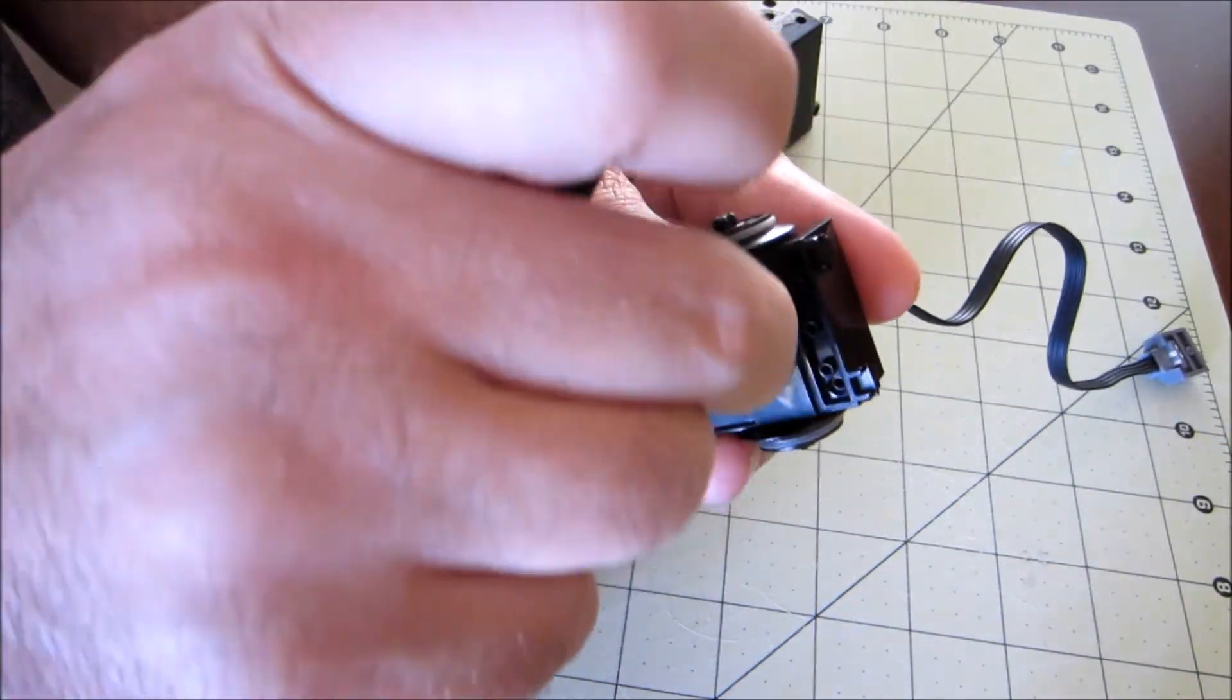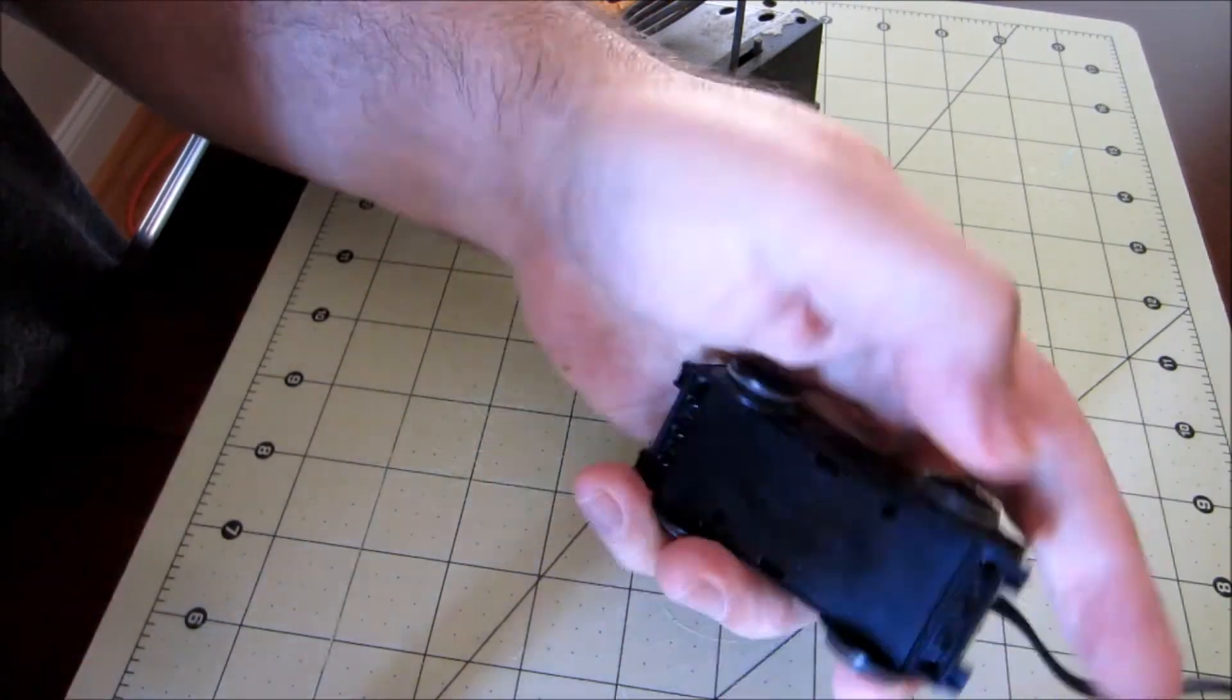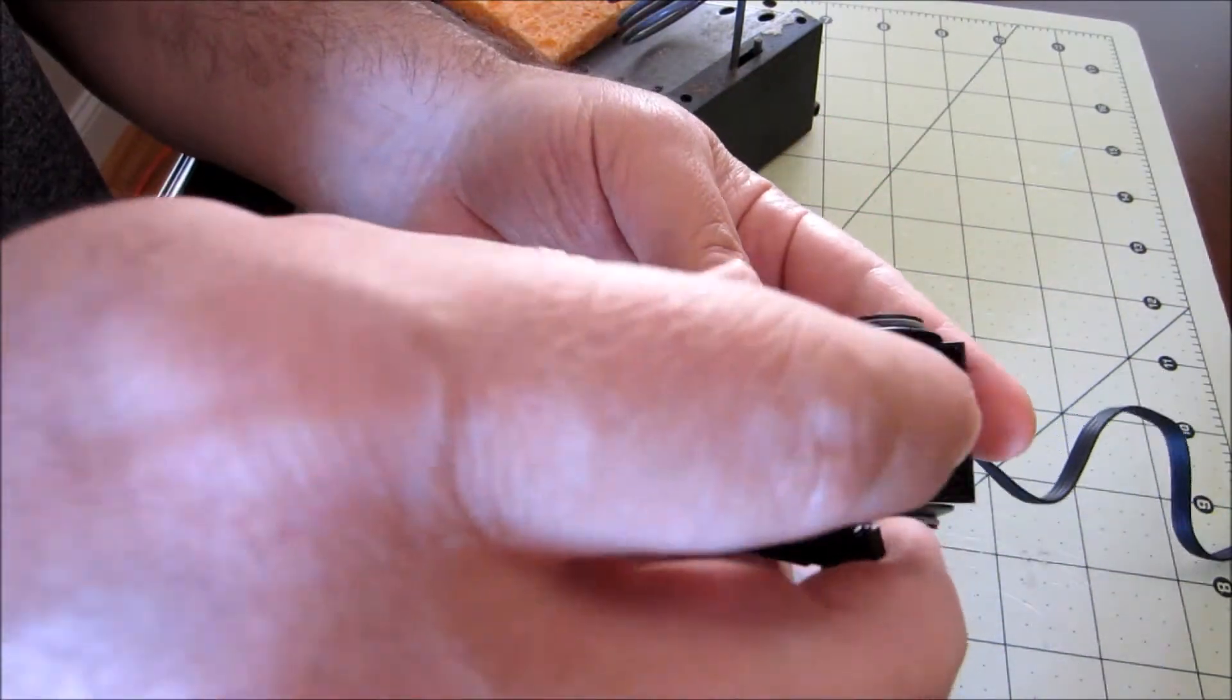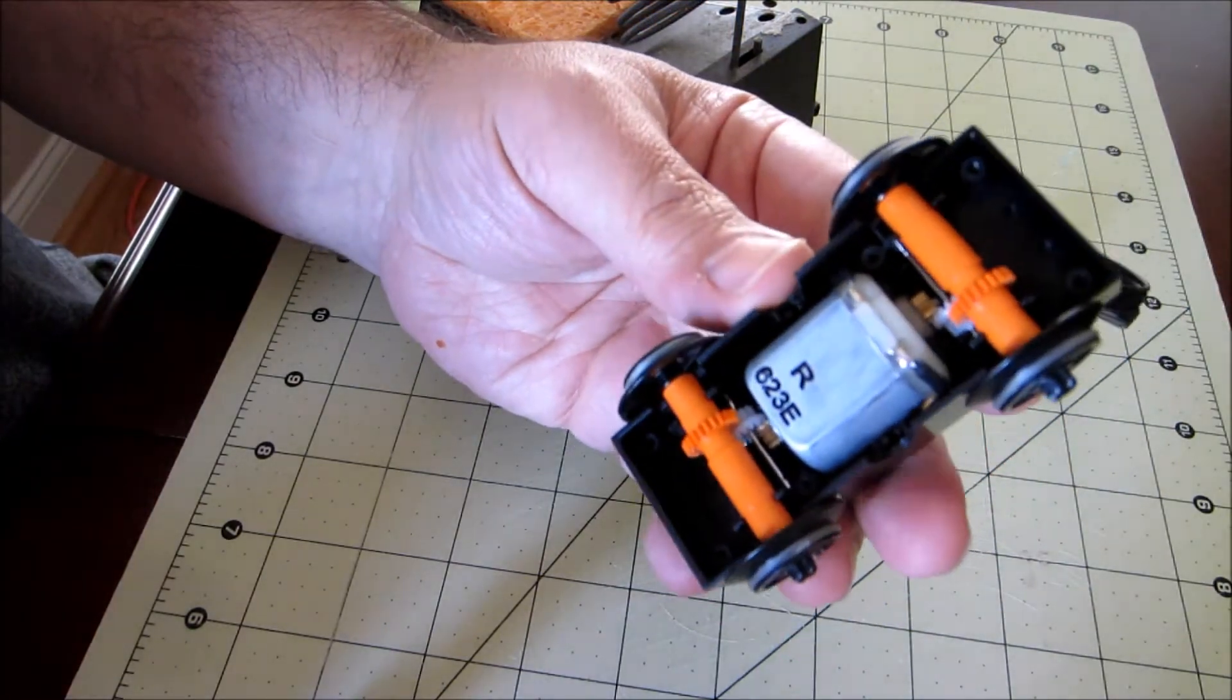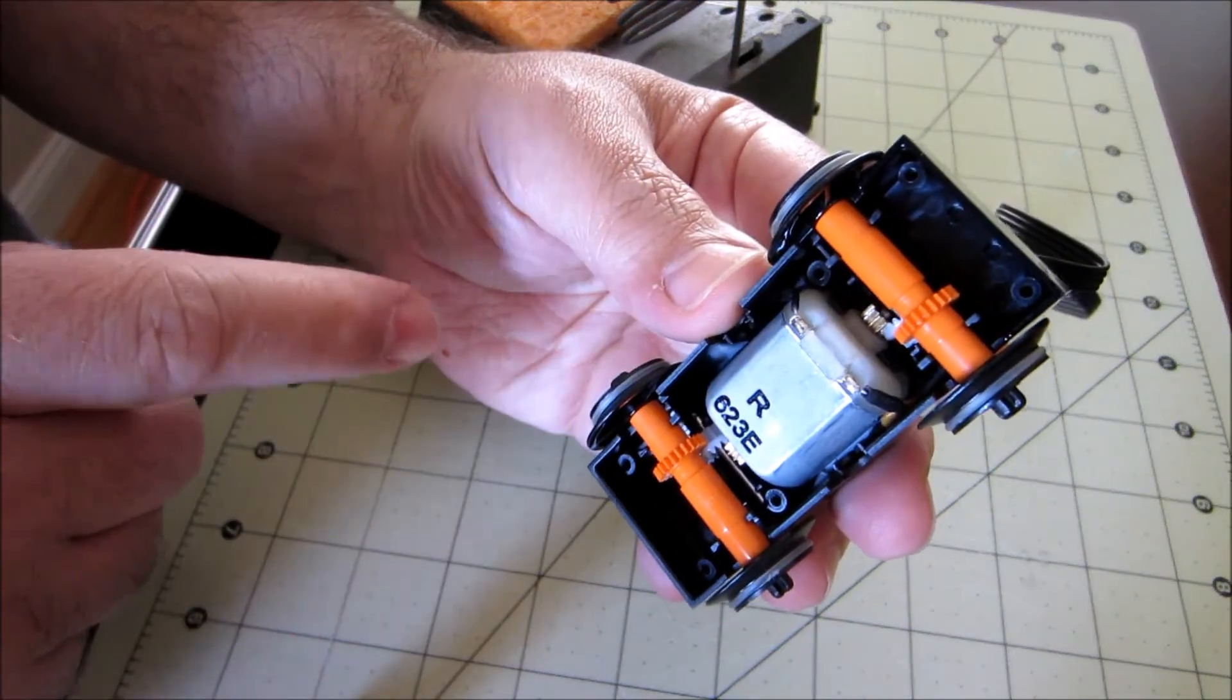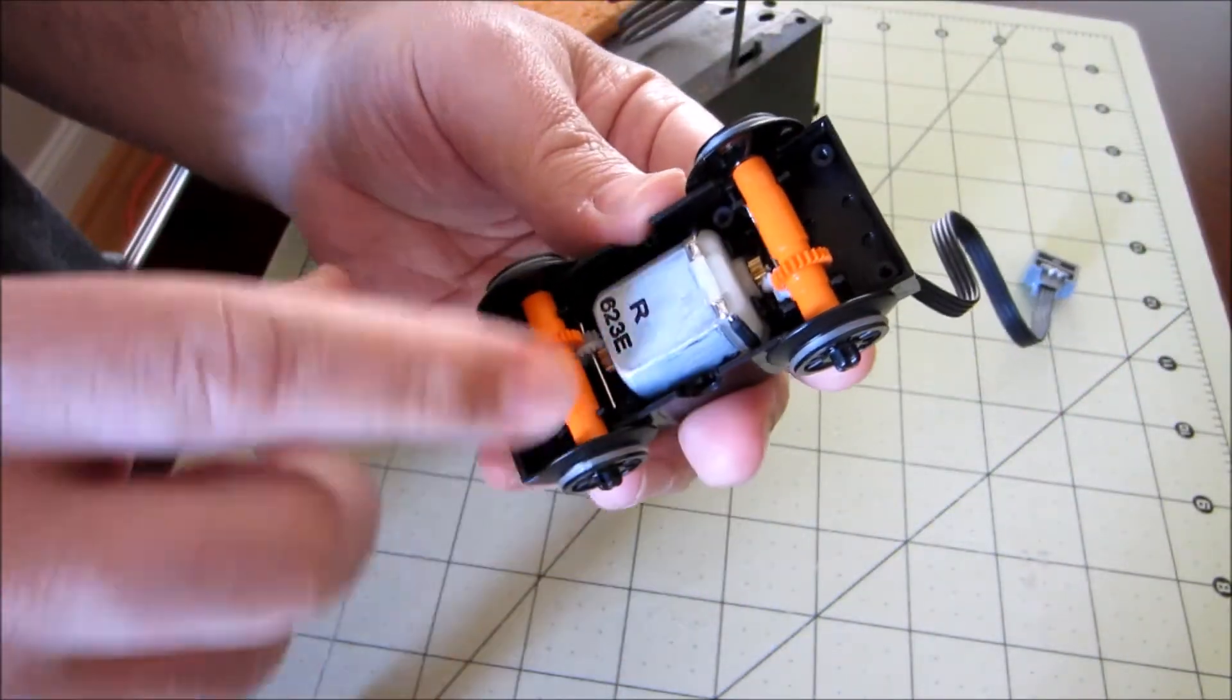And then I just kind of skip forward because it's kind of boring to watch somebody just removing screws. So after you remove the last screw, the bottom pops right off and there you can see the motor connected to the wiring on each side which goes, that's what goes to the connector where it gets its power and all the gears.